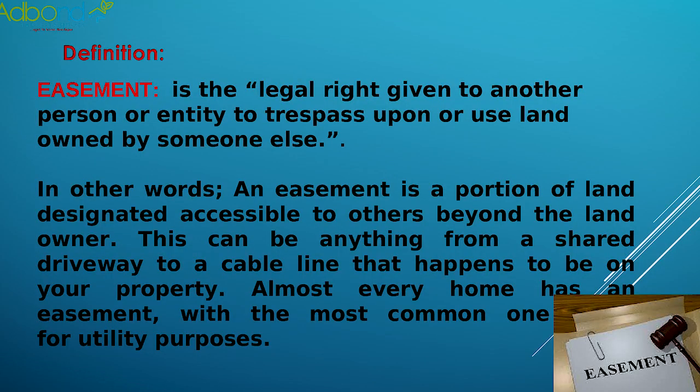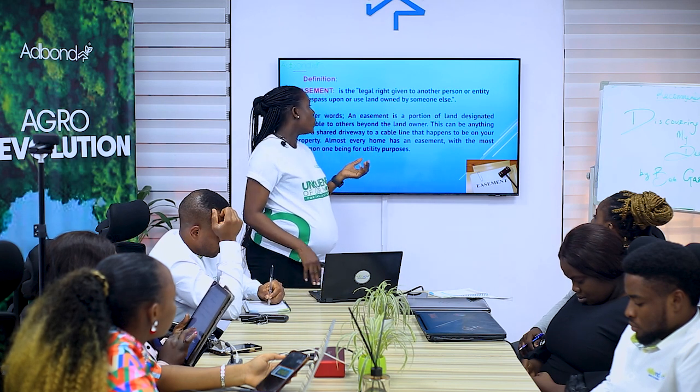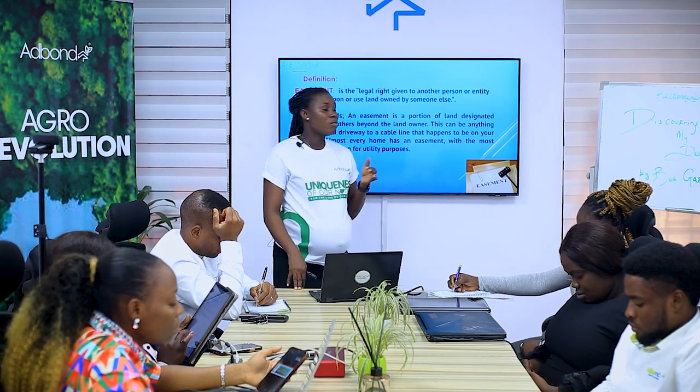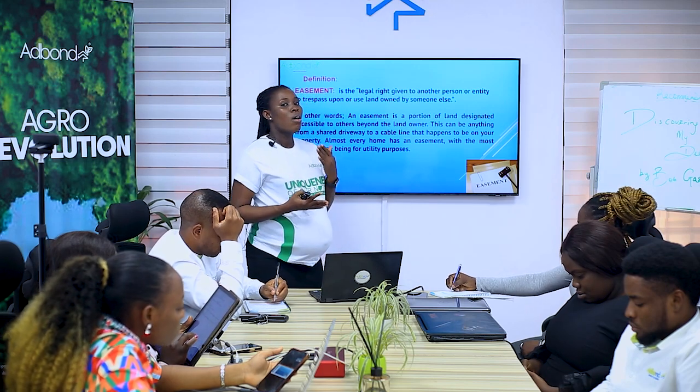First we define what easement is. Easement is the legal right given to another person or entity to trespass upon, or use land owned by someone else. When you have the right to use someone's land which is not yours, they call it easement because you can pass through the land without offending the owner of the land.